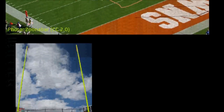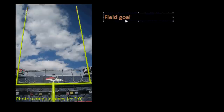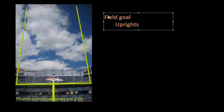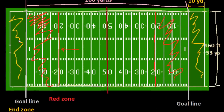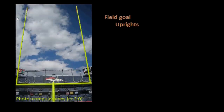One last thing to point out — those would be the field goal uprights, sometimes just called the uprights. You wouldn't call it a field goal — a field goal is what happens when you kick the ball through them. The uprights are at the back of each end zone. You can see the little markings here. We'll get into the point of these eventually — the ball will be kicked through the uprights, and if it does go between them, that means points for the team who kicked it.